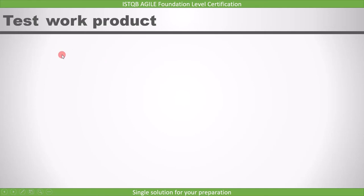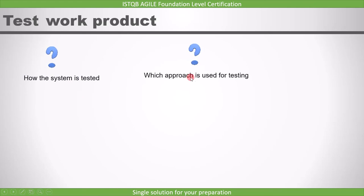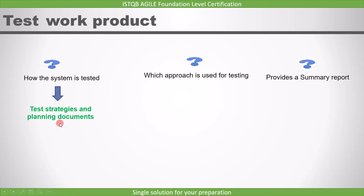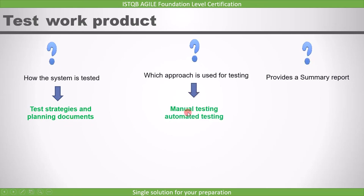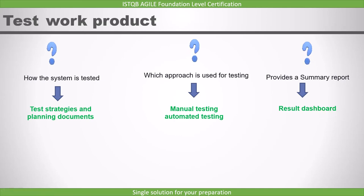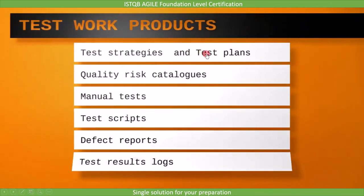The important one is the test work product, and it describes how the system is tested, which approach is used for testing, and provides a summary report. How the system is tested is documented in test strategies and planning documents. The approach could be manual testing, automated testing, or both, and a summary report is provided in the form of a dashboard. The work products of the testing task are: test strategies, test plans, quality risk catalogues, manual tests, test scripts, defect reports, and test results logs.